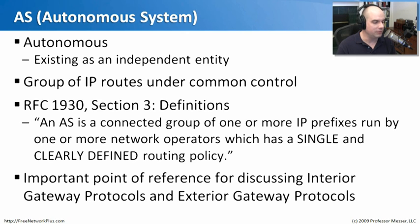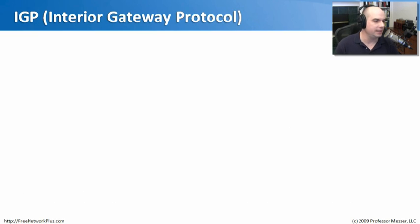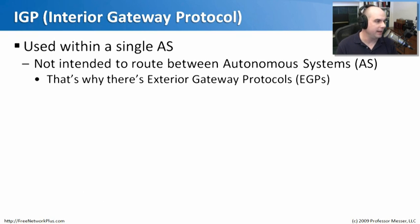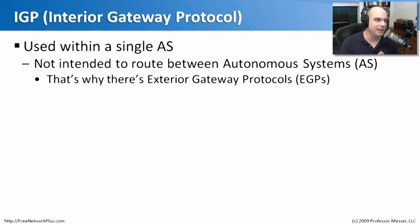Interior gateway protocols and exterior gateway protocols make use of this concept of autonomous systems. An IGP is used within a single autonomous system — say you're a single organization that maintains its own routing and doesn't route outside of your organization. You are a single AS, so interior gateway protocols are what you would use. These IGP protocols are not designed to route between autonomous systems; that's just inside your own environment. There's a completely separate set of protocols called exterior gateway protocols that allow different ASs to communicate between each other.